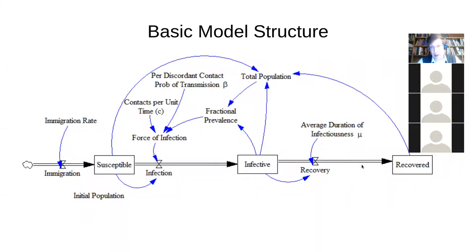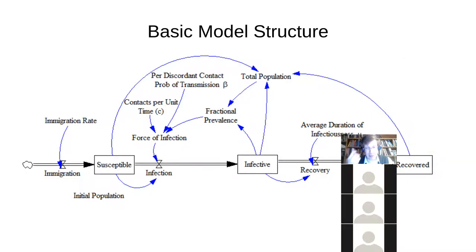You'll recognize this construct — I'm pointing out this stock and this outflow associated with an average duration of infectiousness. This is a first-order delay. And it has an average duration of infectiousness. So this flow — what's the formula? We know all flows have to have the same unit as the stock divided by time. The formula would be the total number of infectives divided by average duration. Exactly right.